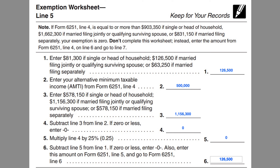Let's go ahead and begin with line 1. You'll enter one of the following numbers based on your tax filing status. For single or head of household taxpayers, enter $81,300. For married couples filing a joint return or a qualifying surviving spouse, enter $126,500. For a married couple filing a separate return, enter $63,250. For our example, John Doe, filing a tax return in 2023, we've entered $126,500 based on a married couple filing a joint tax return.